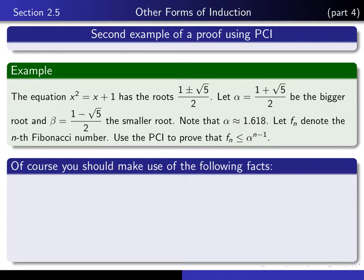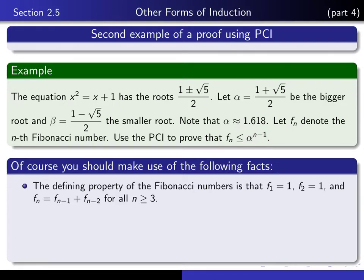In doing that, you're going to have to make use of the following facts. Of course, you have to use the defining property of the Fibonacci numbers, and this is how they were defined. F sub 1 is 1, F sub 2 is 1, and all subsequent ones are defined by adding the previous two together.